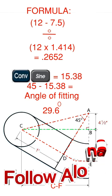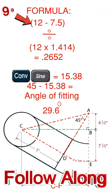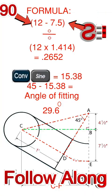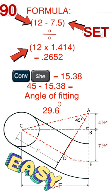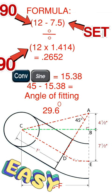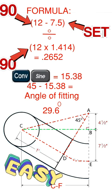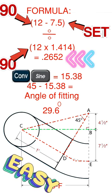So let's do the formula now. In parentheses we've got 12 for the 90 minus 7.5 inches. That's the offset. Close it out with parentheses. Divide by in parentheses 12 for the 90 times 1.414. Close it out with parentheses. Press equals.